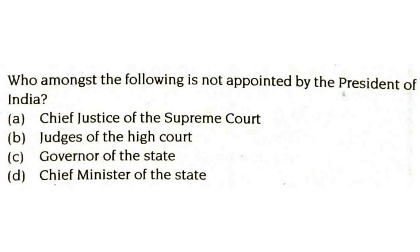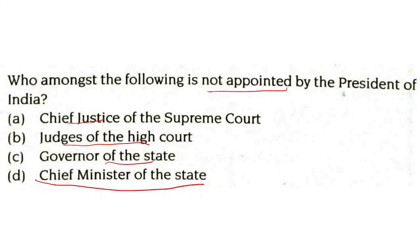Who amongst the following is not appointed by the president of India? The Chief Justice of India is appointed by the president, judges of High Court are also appointed by the president, and the governor of a state is also appointed by the president. However, the Chief Minister of a state is not appointed by the president — they are appointed by the governor of that particular state.